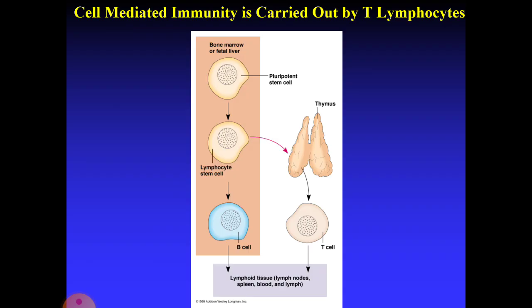The proliferation of T cells in cell-mediated immunity is carried out by T lymphocytes. The process begins in the bone marrow or fetal liver, where pluripotent stem cells are transferred to lymphocytes, and from there stem cells are transferred as T cells to the thymus, where they develop into mature T cells. These matured T cells then circulate in the lymphatic tissues including lymph nodes, spleen, blood, and lymph.